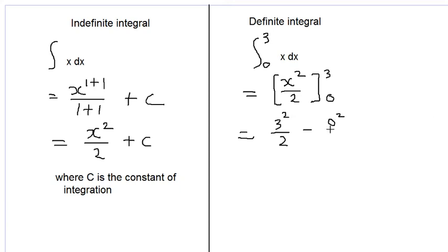and we will work this out which is 9 over 2 subtract 0 times 0 is 0 over 2 which is just 0 so our answer is 9 over 2